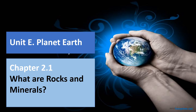Welcome back Science 7. Today we are continuing our Unit E, Chapter 2.1: What are rocks and minerals? Last time we talked about some properties of minerals, and we went through some examples like calcite and some of the mineral properties such as streak, luster property, and so on.